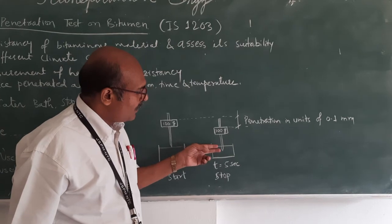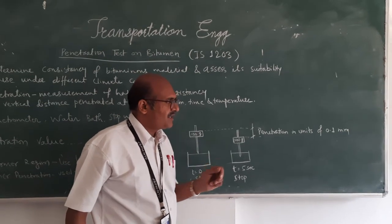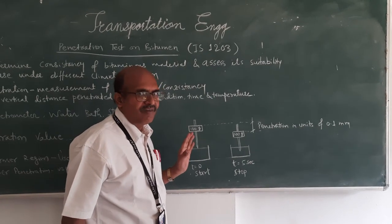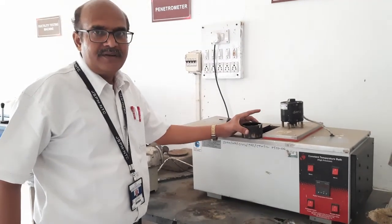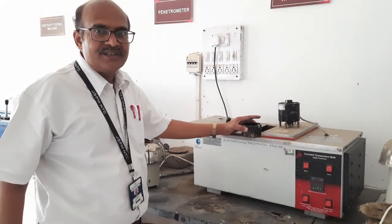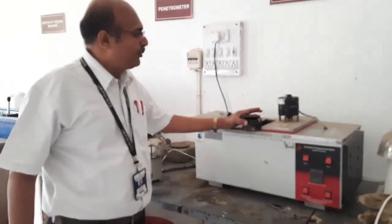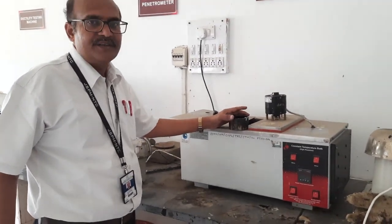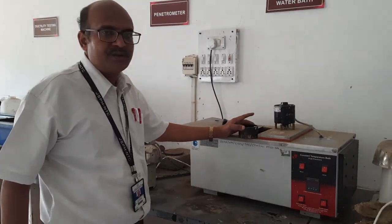We find out what is the depth of that penetration. The depth of penetration is our result, and it is expressed in units of 0.1 mm. This penetration result gives us the penetration value of the bitumen. For sample preparation, we heat the bitumen to about 60 degrees and pour it at 90 degrees into the container so that it pours properly. After that, we keep the temperature of this sample at 25 degrees centigrade in the water bath.